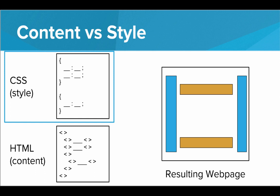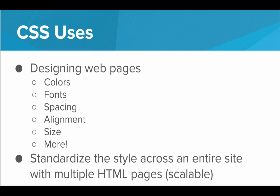We're separating out the content from the style. The people making the content don't really have to worry about the look and feel, and the people designing the web pages don't really have to worry about what the content is going to be. Content and style are different enough to warrant having different languages to describe them. CSS is great for adding things like colors, fonts, spacing, alignment, size, and even more. By developing the CSS code, we can standardize the style across an entire website. Rather than going to each HTML file and adding style to every single tag, we just write CSS once and it applies to the entire website — Facebook looks the same on every page, CodeHS looks the same on every page. This is much more scalable than writing style equals on every single HTML tag.